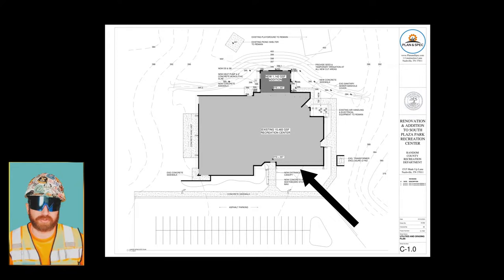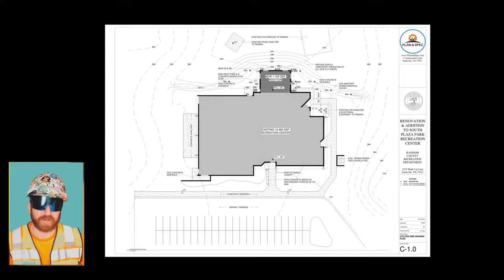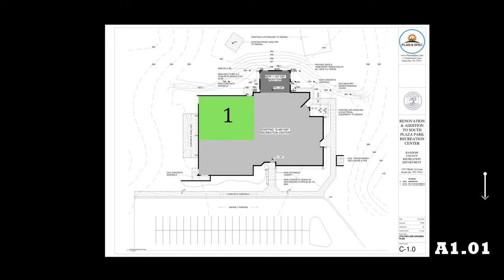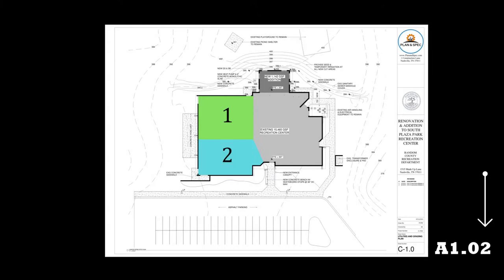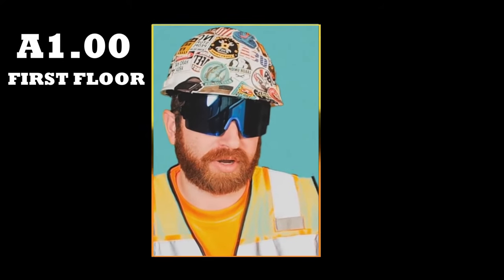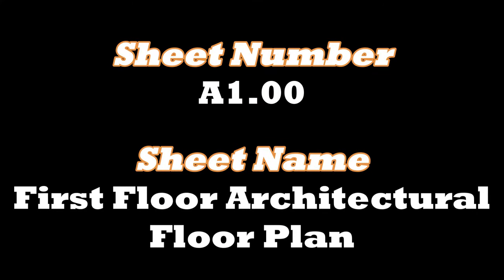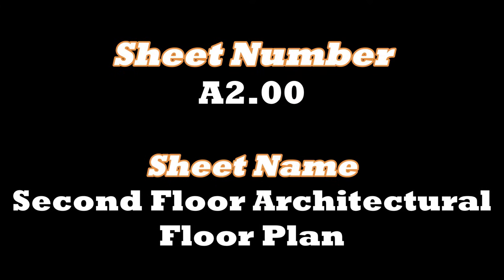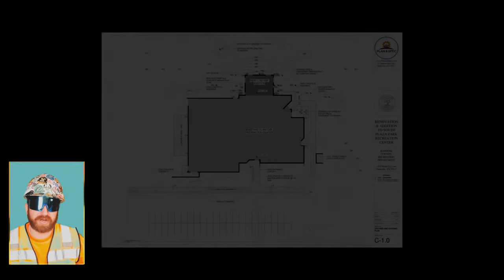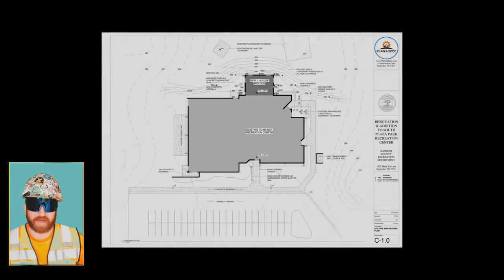On a large square foot construction project, you might not be able to depict everything on one page, so the architect could use the 100 series just to depict floor plans — section 1 being 101, section 2 being 102, section 3 being 103. Or if they organize the drawings by A100 meaning first floor and A200 meaning second floor, they could also just title the pages as such: A100 first floor architectural, A200 second floor architectural. Really, they're just going to name them as best they can to describe exactly what's on that page.